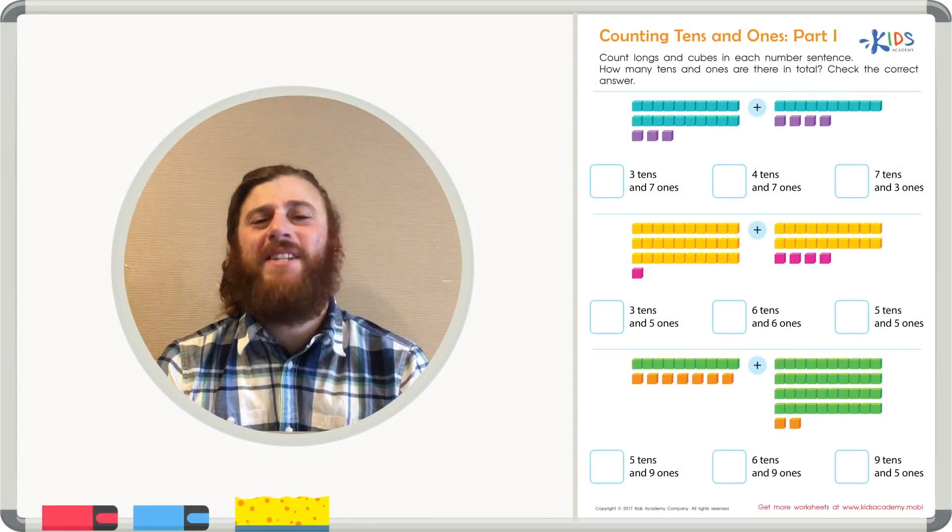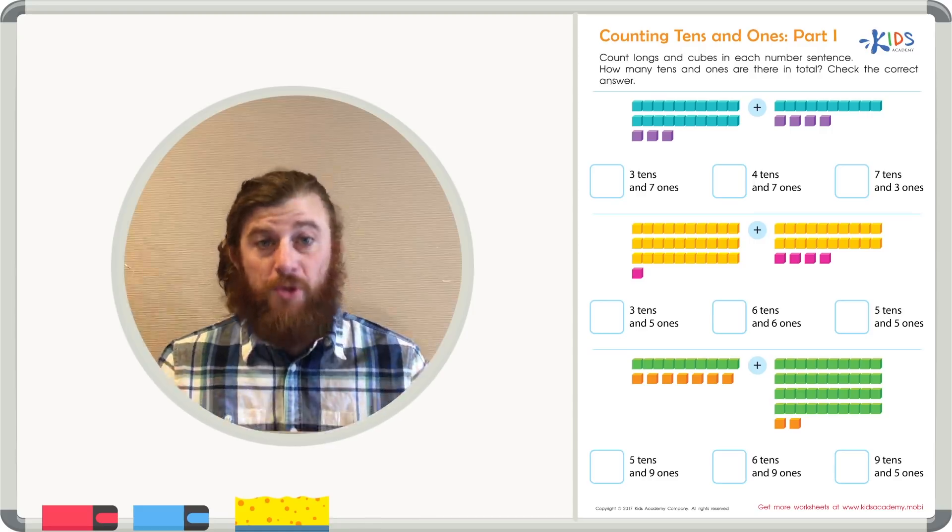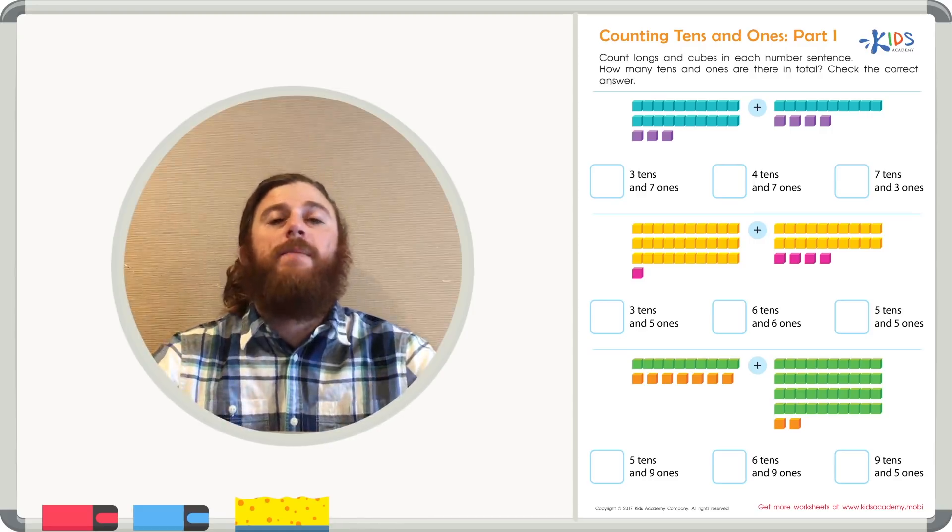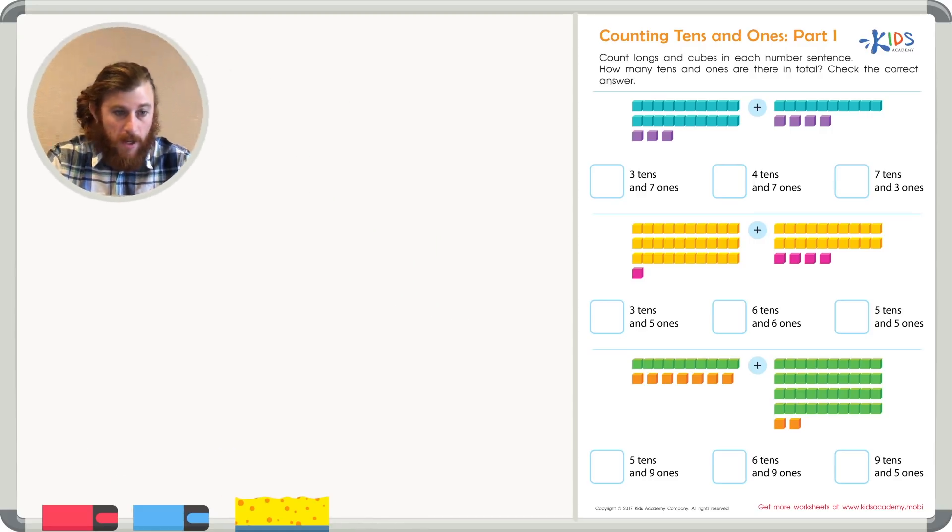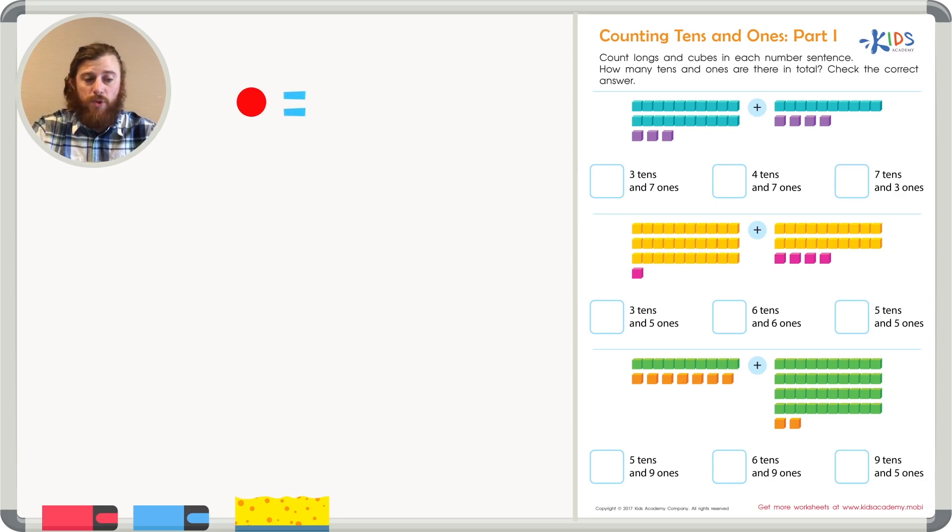Today we're going to be using base 10 blocks to add. Let's remind ourselves what each of the base 10 blocks represents. A cube represents just one. It represents one individual number. So for example, if I had 4 cubes, that just equals 4.